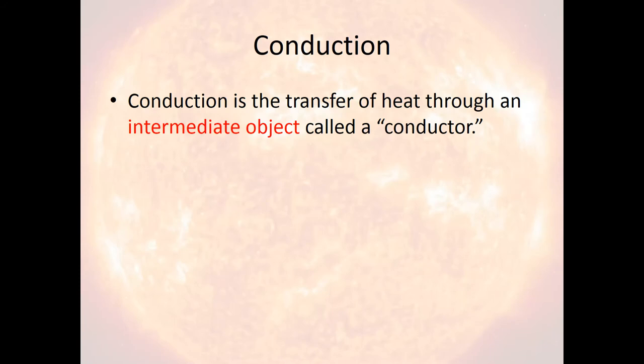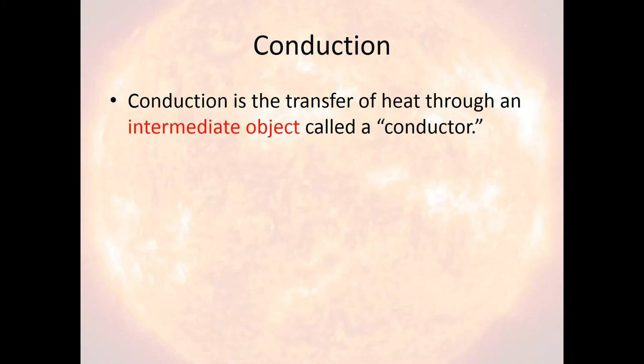Put your hand on an object while watching this video. You feel heat either traveling from the object to your hand — in that case it would feel hot — or traveling from your hand to the object, in which case it would feel cold. This is heat transfer through direct contact. You have two solid objects — your hand and the object you're touching — and heat is traveling directly between the two of them. That is an example of conduction.